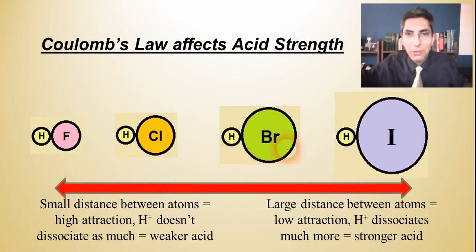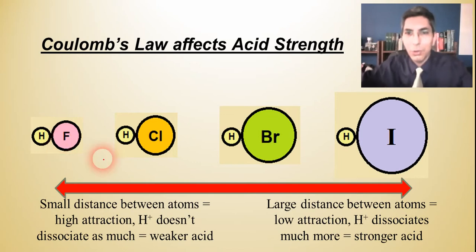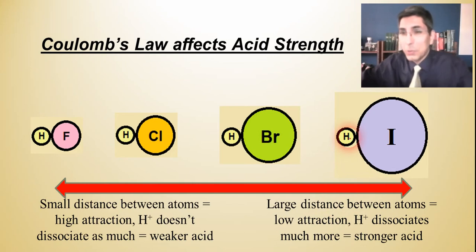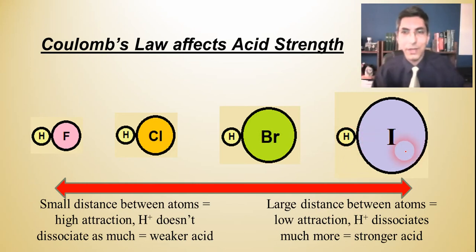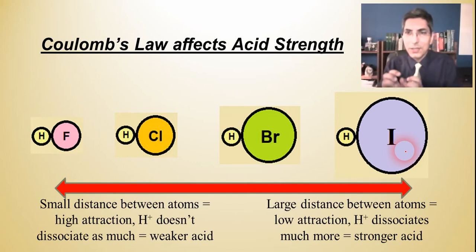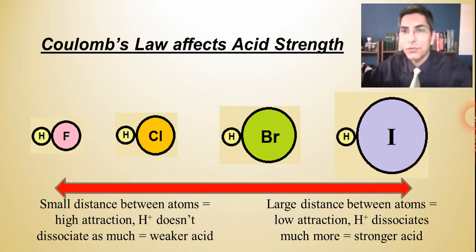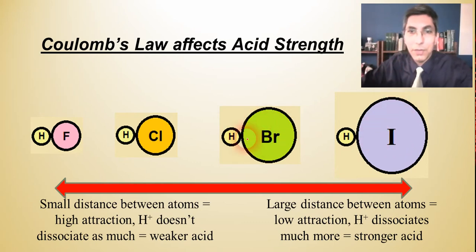Why are HCl, HBr, and HI strong acids but HF is not? It has to do with Coulomb's law. Between hydrogen and iodine atoms there's a large distance, which means a lower attraction, so the compound is able to dissociate much more easily — making it a stronger acid. That's why HI and HBr are strong acids.